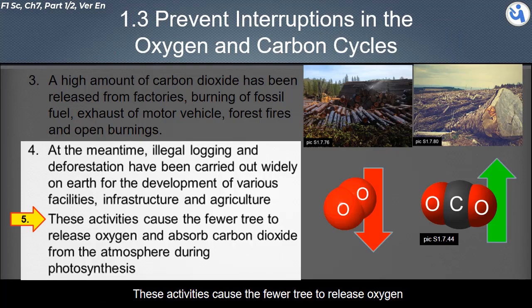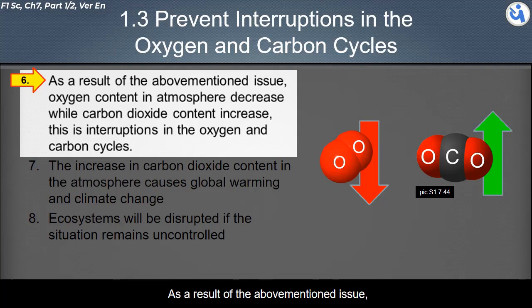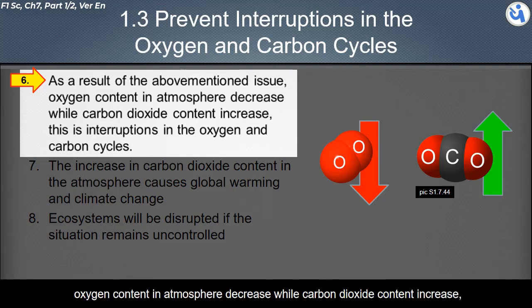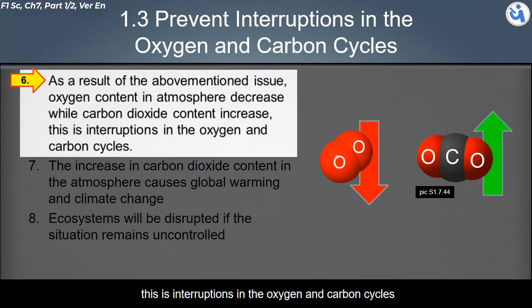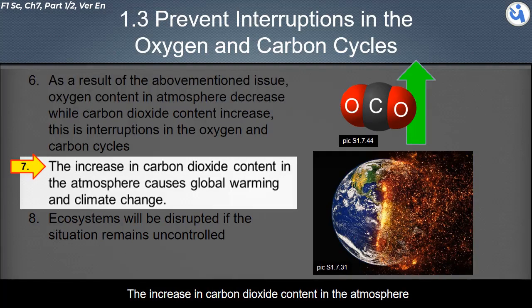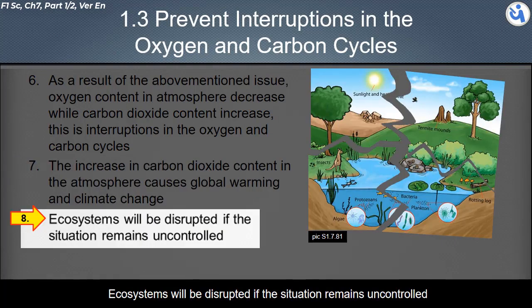These activities cause fewer trees to release oxygen and absorb carbon dioxide during photosynthesis. As a result, oxygen content in the atmosphere decreases while carbon dioxide content increases — this is the disruption in the oxygen and carbon cycles. The increase in carbon dioxide content causes global warming, and ecosystems will be disrupted if the situation remains uncontrolled.